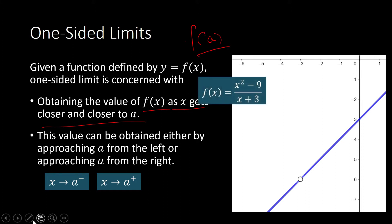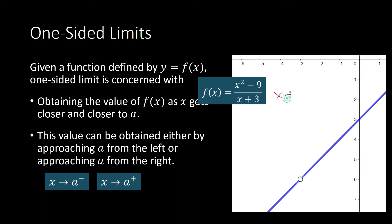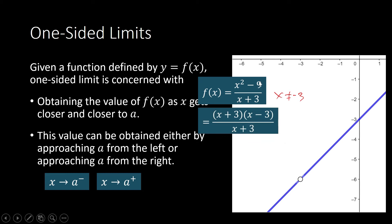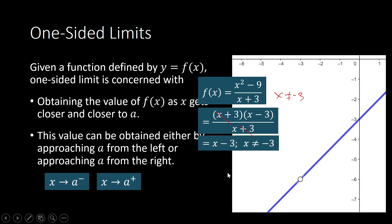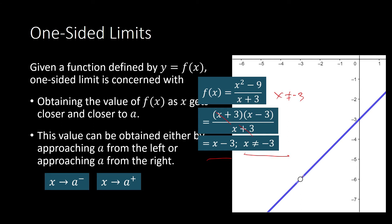This graph is the graph of this function: f of x is equal to x squared minus 9 divided by x plus 3. This is a rational function, and you know that we have a restriction for the domain — x cannot be equal to negative 3. If you simplify, x squared minus 9 equals x plus 3 times x minus 3, so we are left with f of x equals x minus 3, but with the restriction that x cannot equal negative 3. That is why we have an open circle on the graph — an open dot means that point is not part of the graph.